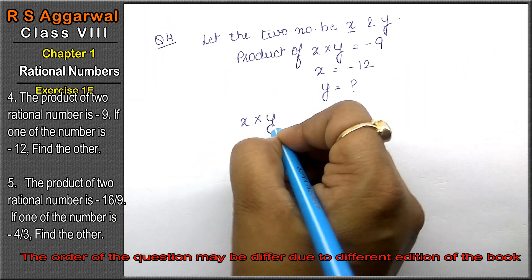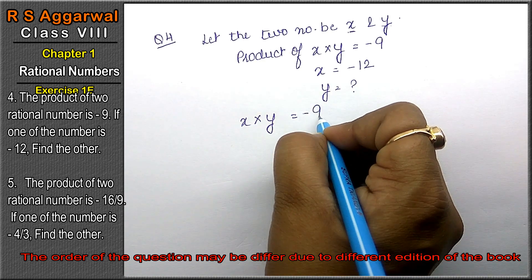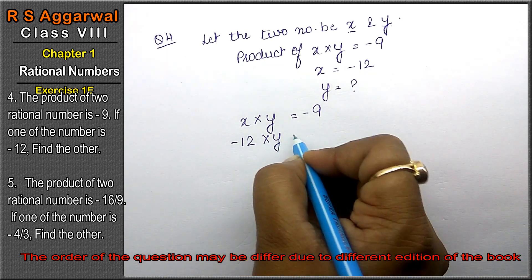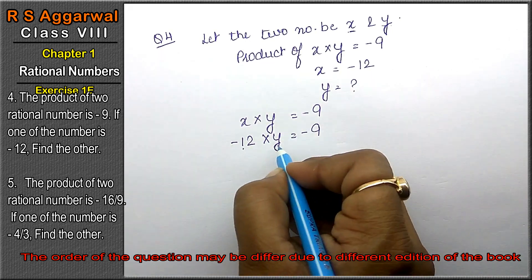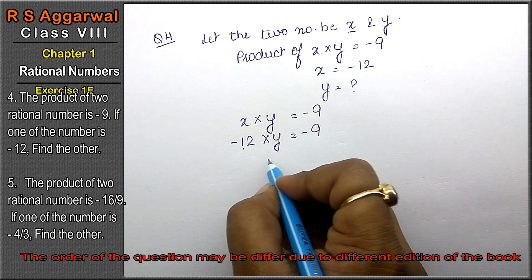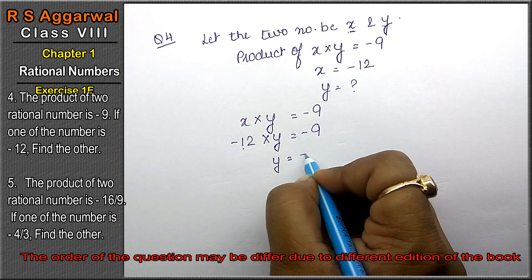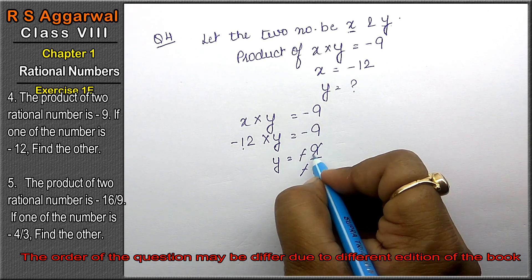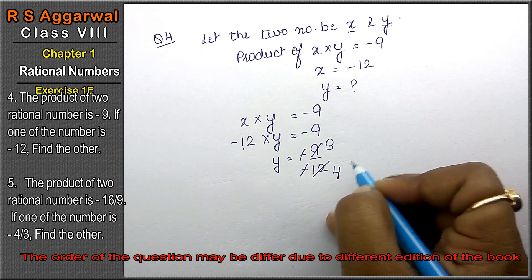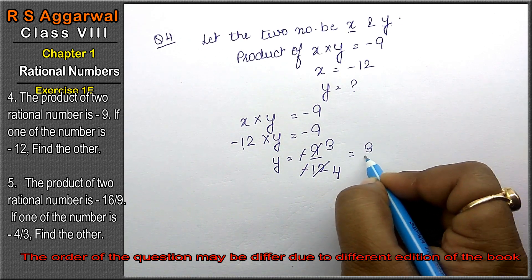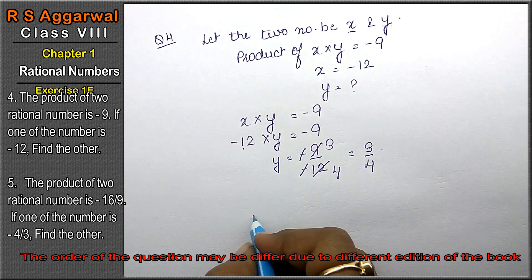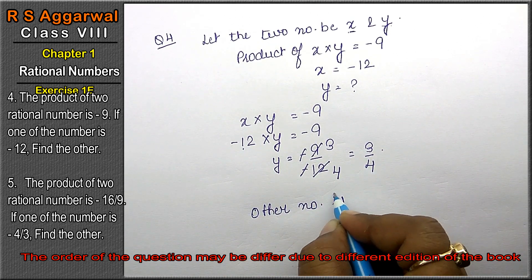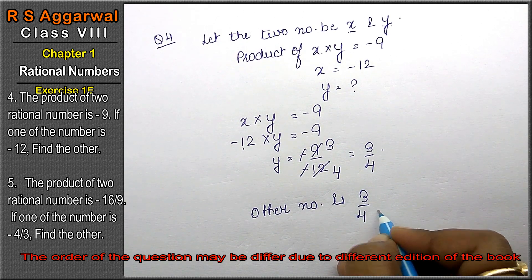So x multiplied by y equals -9. x's value is -12, so: -12 × y = -9. Dividing both sides: y = -9 ÷ -12. The minus signs cancel. Since 3 threes are 9 and 3 fours are 12, y = 3/4. The other number is 3/4.